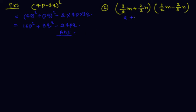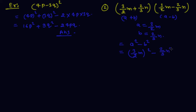In the second example, we have (A + B)(A − B) where A is 3/2 m and B is 2/3 n. Applying the identity A² − B², we put the values: (3/2 m)² − (2/3 n)² = 9/4 m² − 4/9 n². This is the required answer.